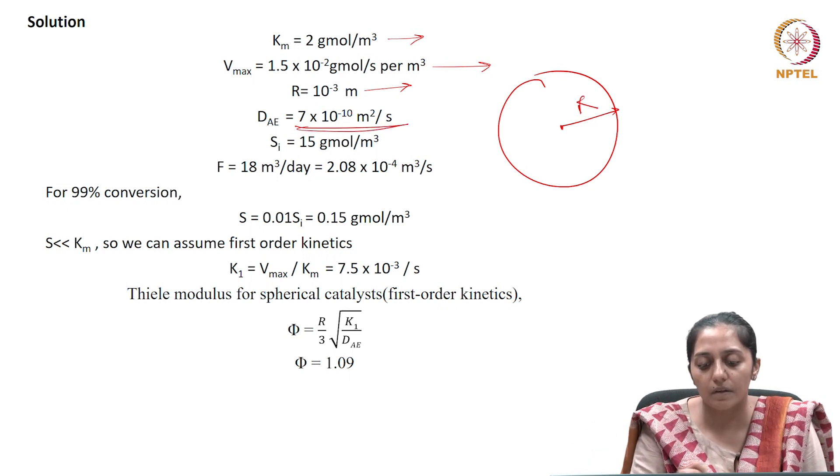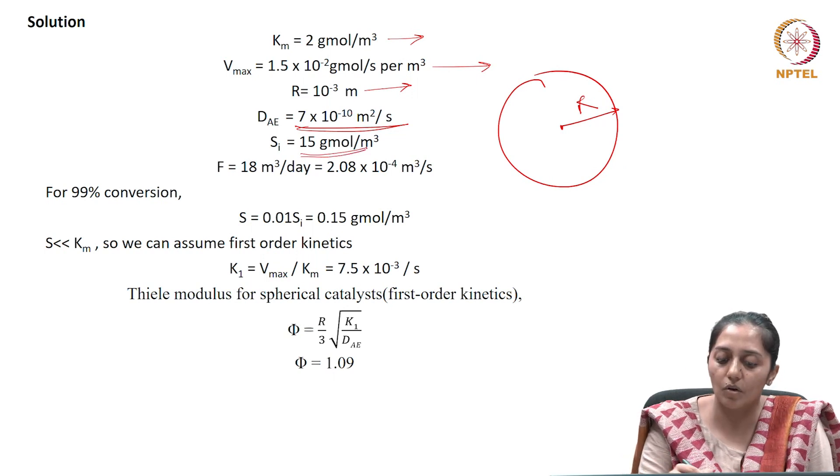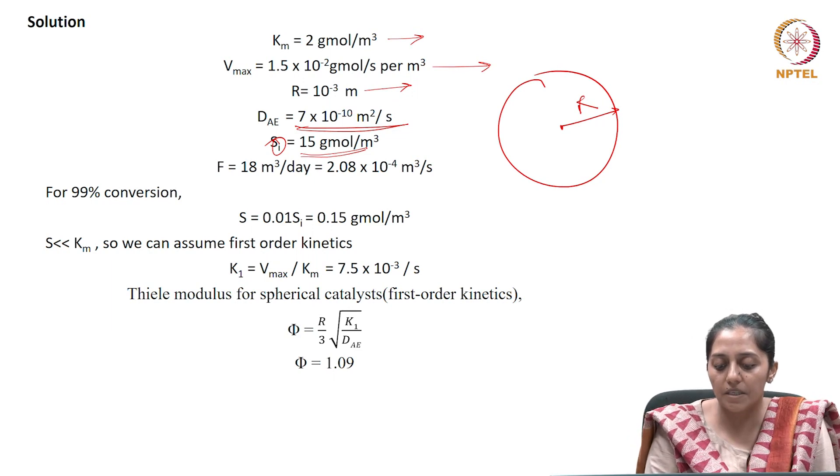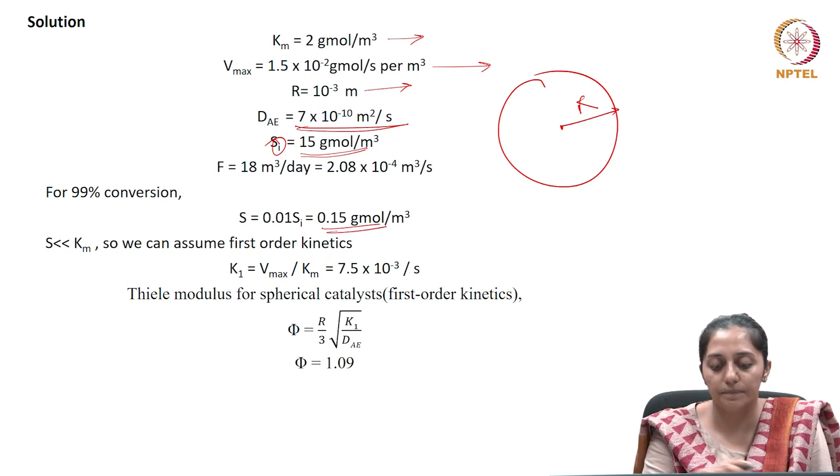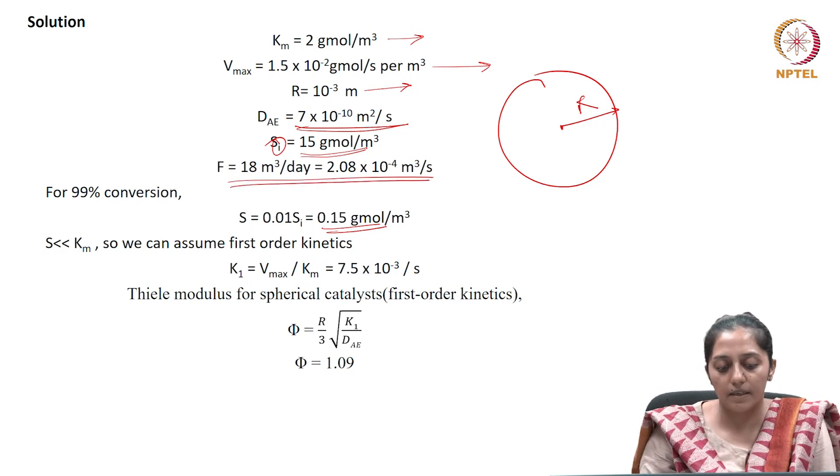Diffusivity is given, as is the initial substrate concentration Si. With 99% conversion, the residual substrate becomes 0.15 gmol/m³. The volumetric flow rate is given.